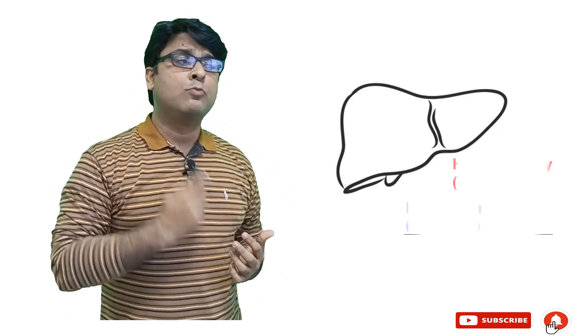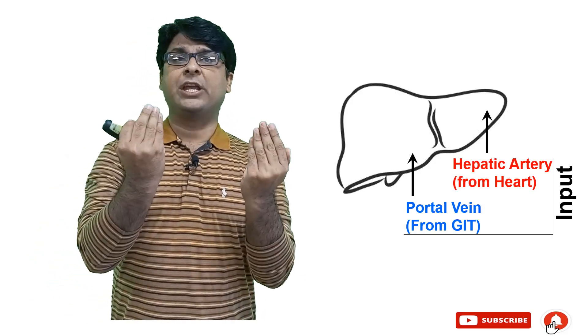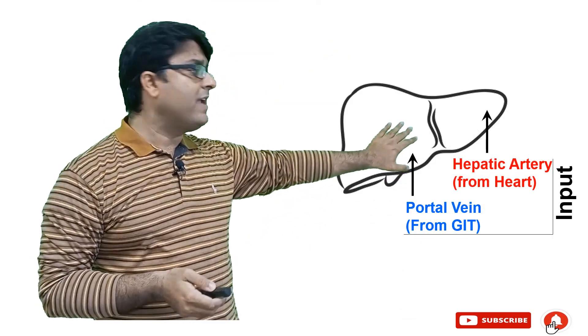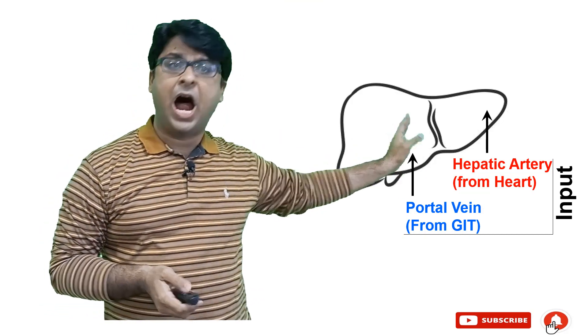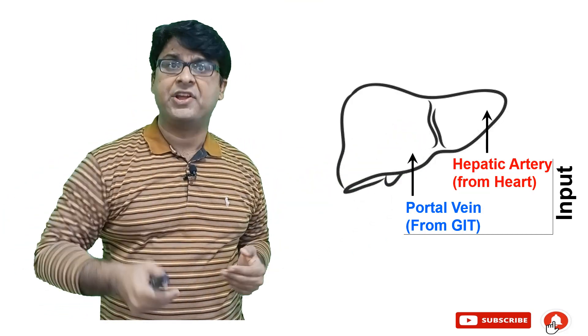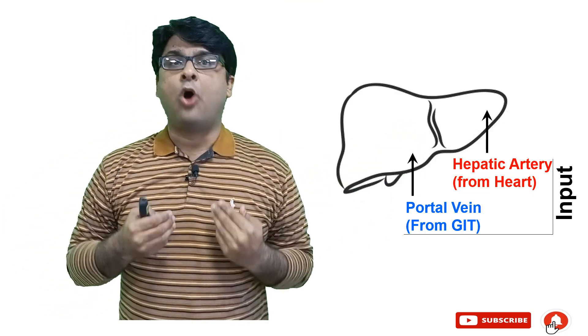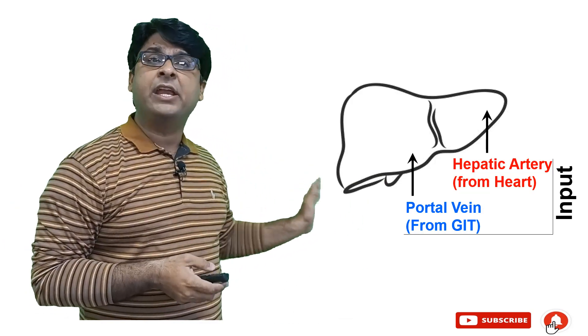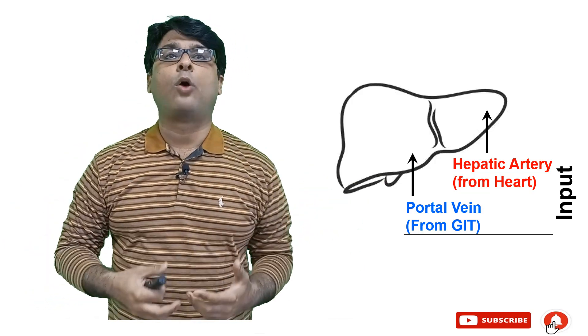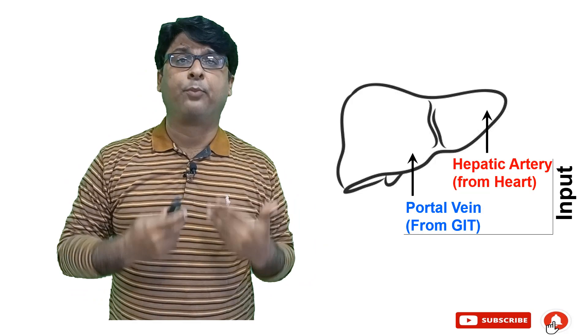Before we start the liver function tests, let's talk about the liver itself. This is one of the largest organs of your body, occupying a major chunk of your abdominal cavity. You must know the inputs in terms of blood supply. We have two different inputs: one is the hepatic artery, carrying oxygenated blood from the heart, and the other — actually the larger input — is from the gastrointestinal tract via the portal vein.